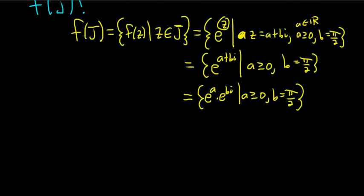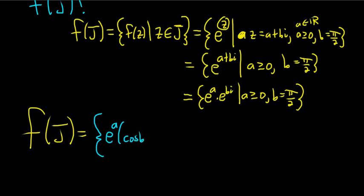Let's go ahead and use Euler's formula. Let me write it again over here. So f of J, just to make it a little bit cleaner. This is equal to the set of all the elements of the form e to the a. And then e to the bi, this is cosine b plus i sine b. That's Euler's formula.